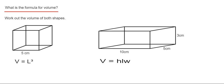So the first one, we've got a cube of side length 5 centimeters. And to work out the volume of the cube, the formula is V equals L cubed, where V stands for the volume and L stands for the side length.